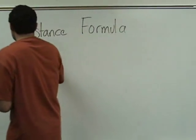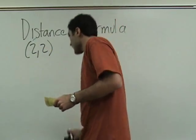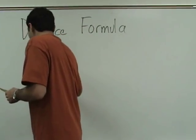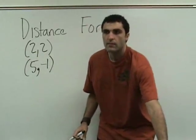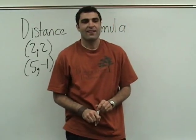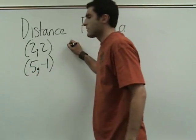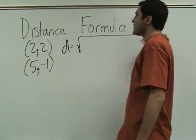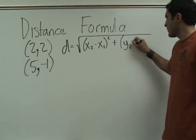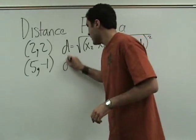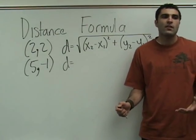Next point: two, two. Write it down. Ready to plug in? What is the formula? The square root of — x2 minus x1 squared — and plus, parenthesis of y2 minus y1 squared. Write the formula every time. Remember: parenthesis, x2 minus x1 squared, plus parenthesis of y2 minus y1 squared. That's the formula.